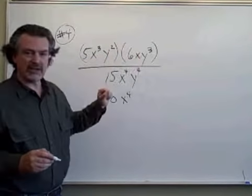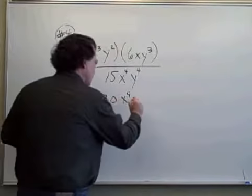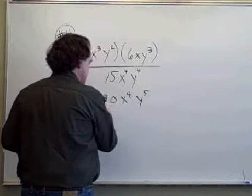Y to the second times y to the third gives us a total of five y's being multiplied. That's y to the fifth.